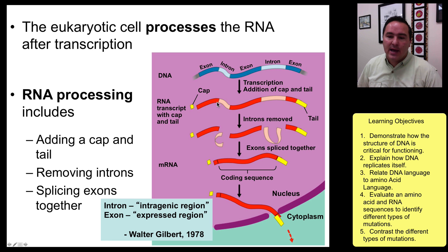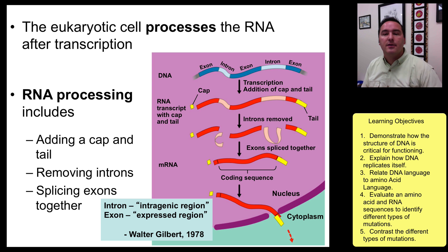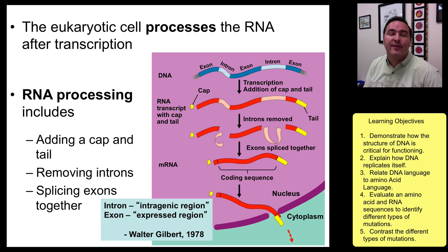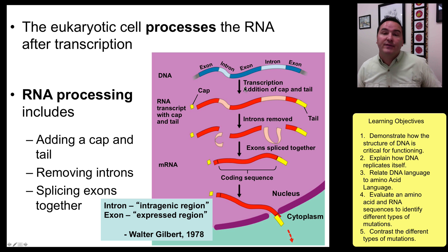An important concept is alternative splicing. In eukaryotes, you can splice together exon 1, exon 2, and exon 3, or just exon 1 and exon 2, or exon 2 and exon 3, or exon 1 and exon 3. These alternative ways of splicing exons together explain why, even though humans only have a little over 20,000 genes, we can make more than 200,000 different kinds of proteins. This was a huge discovery made in roughly the last 15 years.